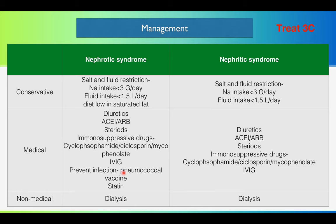In nephrotic syndrome, as infection is very prone to occur, it is better to start pneumococcal vaccination and immunization. For dyslipidemia, statins should be used as well. After medications, if the patient is complicated with acute renal failure, then the patient might need dialysis in both cases.